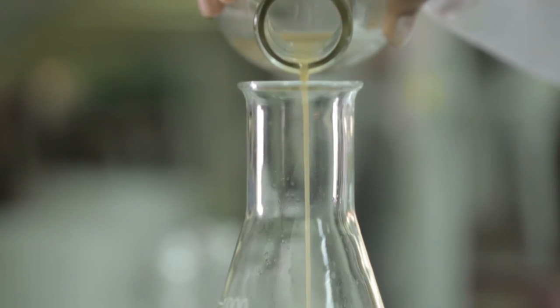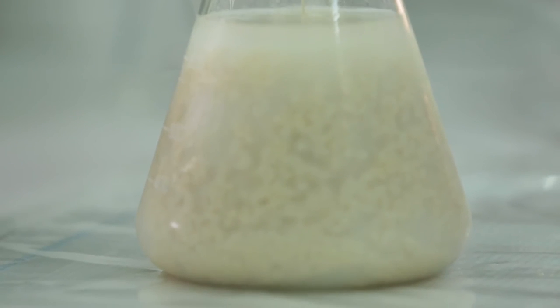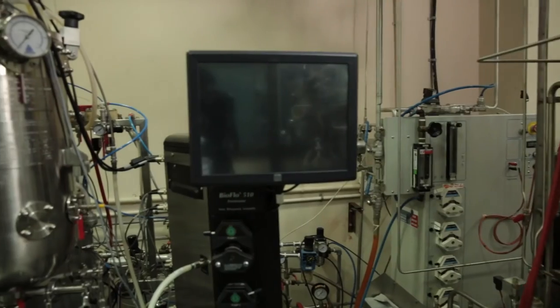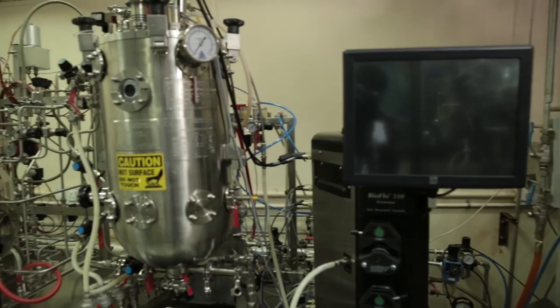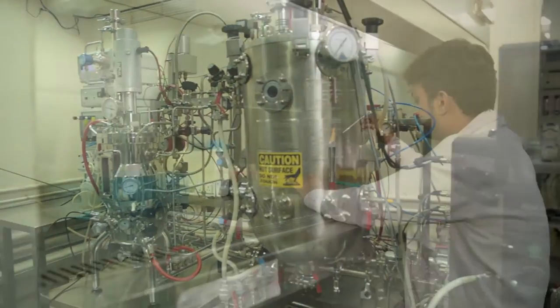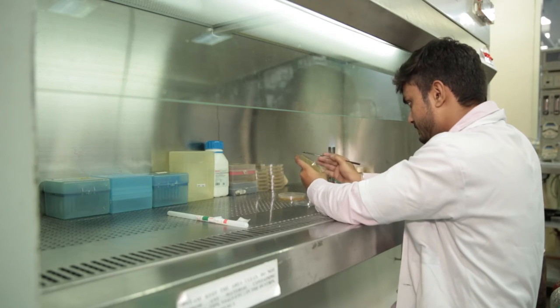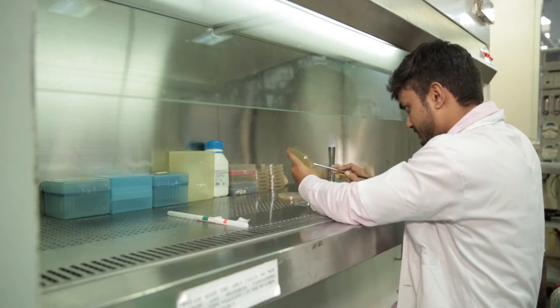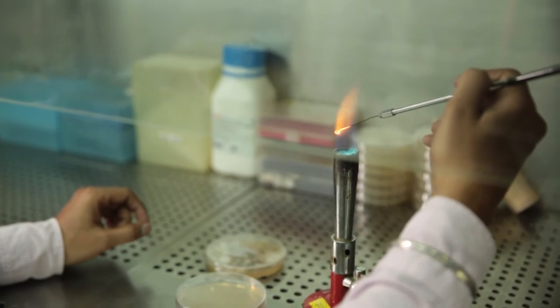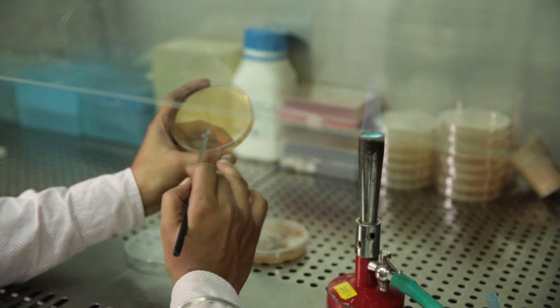During the process, the initial optimization is carried out in shake flask and further transferred to laboratory scale fermenters. In the beginning, we screened all Aureobasidium strains for pullulan production using a media containing glucose, yeast extract and peptone.